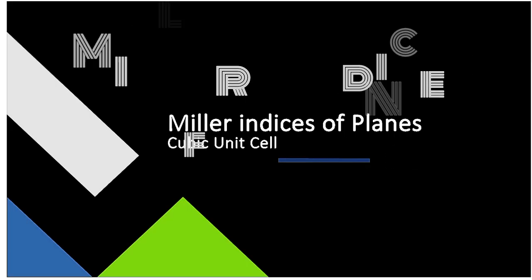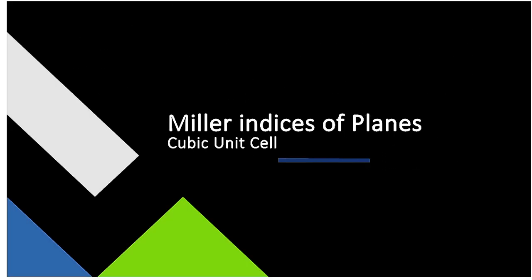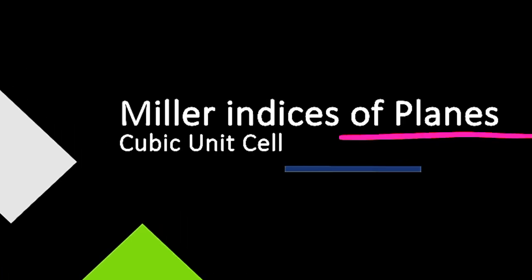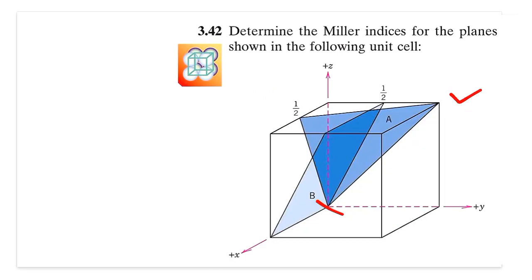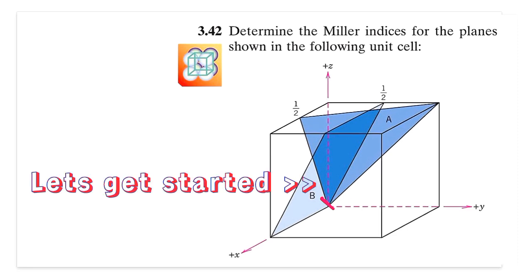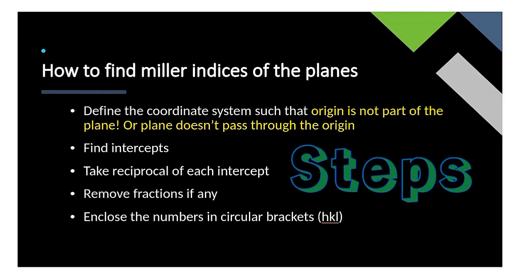Hello everyone, I hope you're doing well. In this video we are going to see how we can find out the Miller indices for planes in a cubic unit cell. In a previous video we already calculated indices for a particular plane, and in this video we'll be doing it for a different plane — one where the plane is intersecting the origin region, so we may need to shift the region. Let's quickly get started.